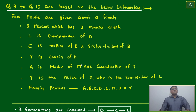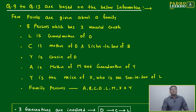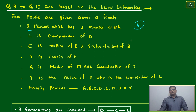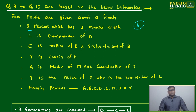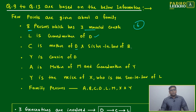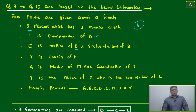Come, another case. Questions number 9 to 13 are based on the below information. A few points are given about a family. Eight persons, which has three married couples — meaning six are coupled — and two are bachelors. L is the grandmother of D. C is the mother of D and sister-in-law of B.